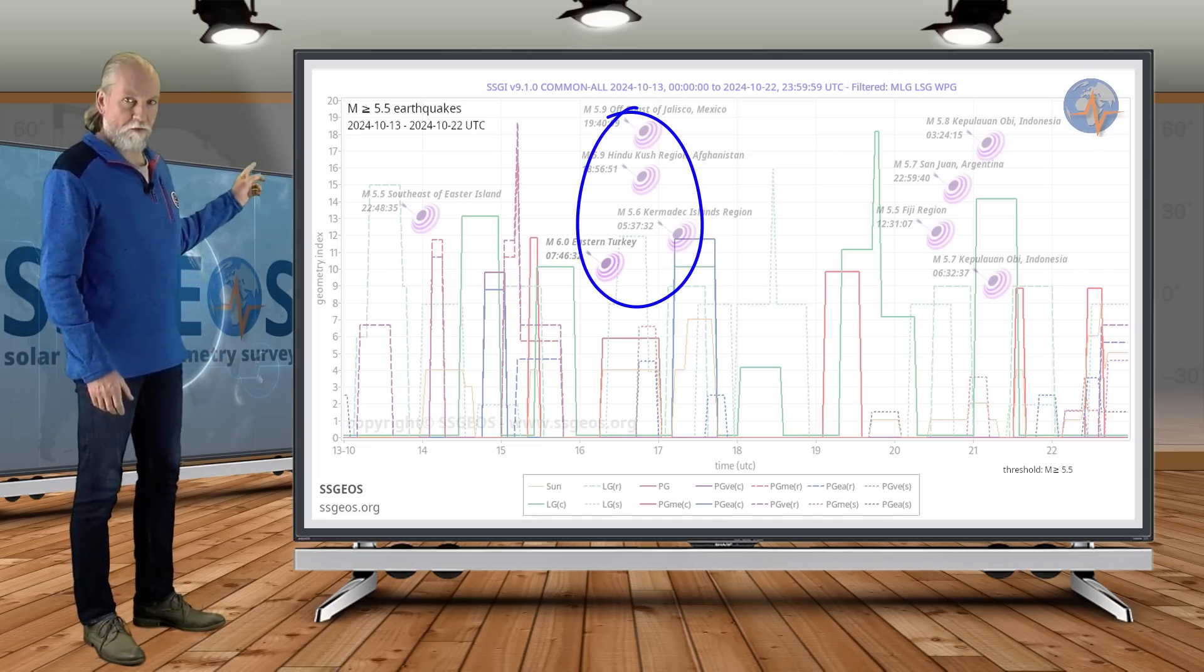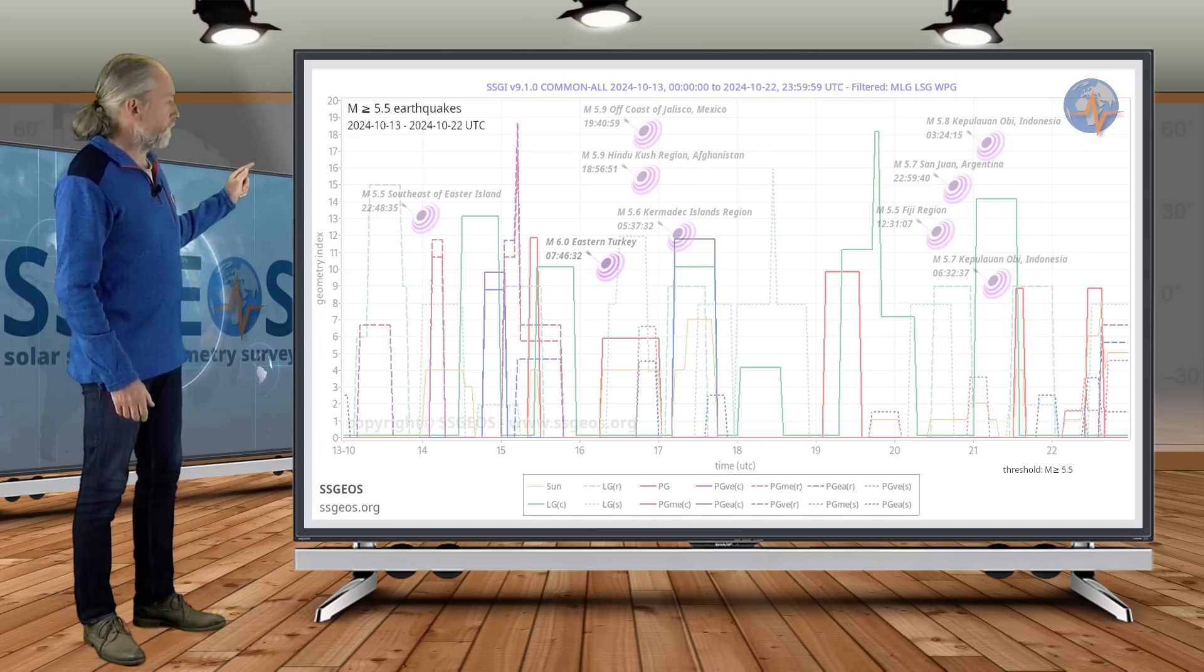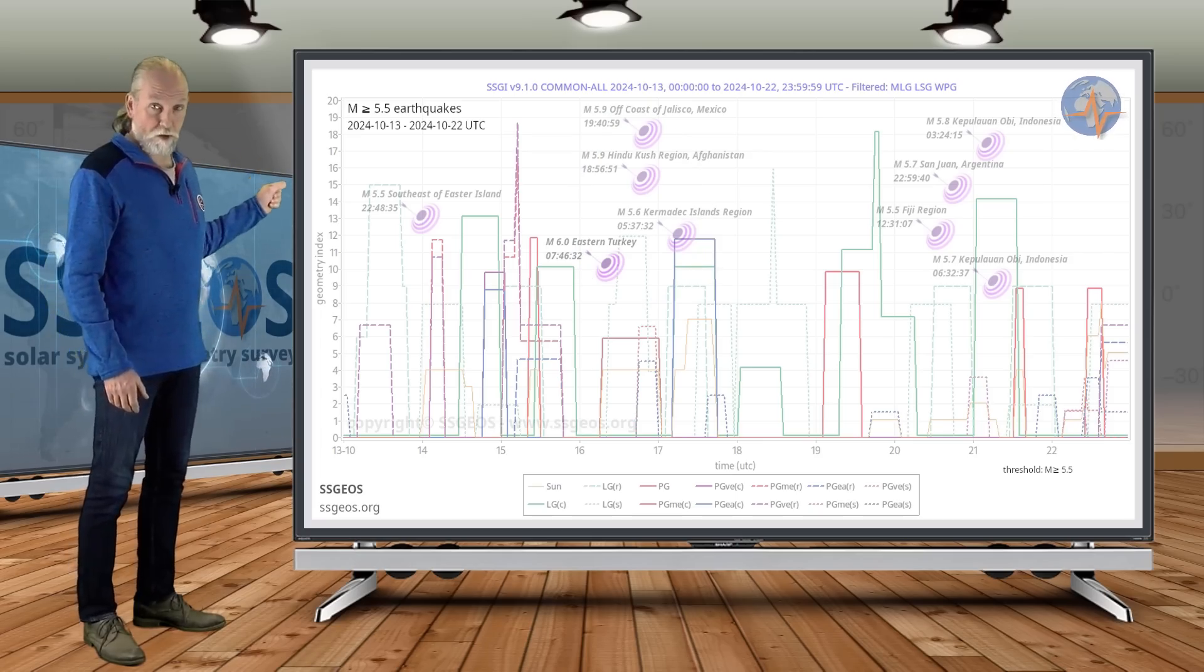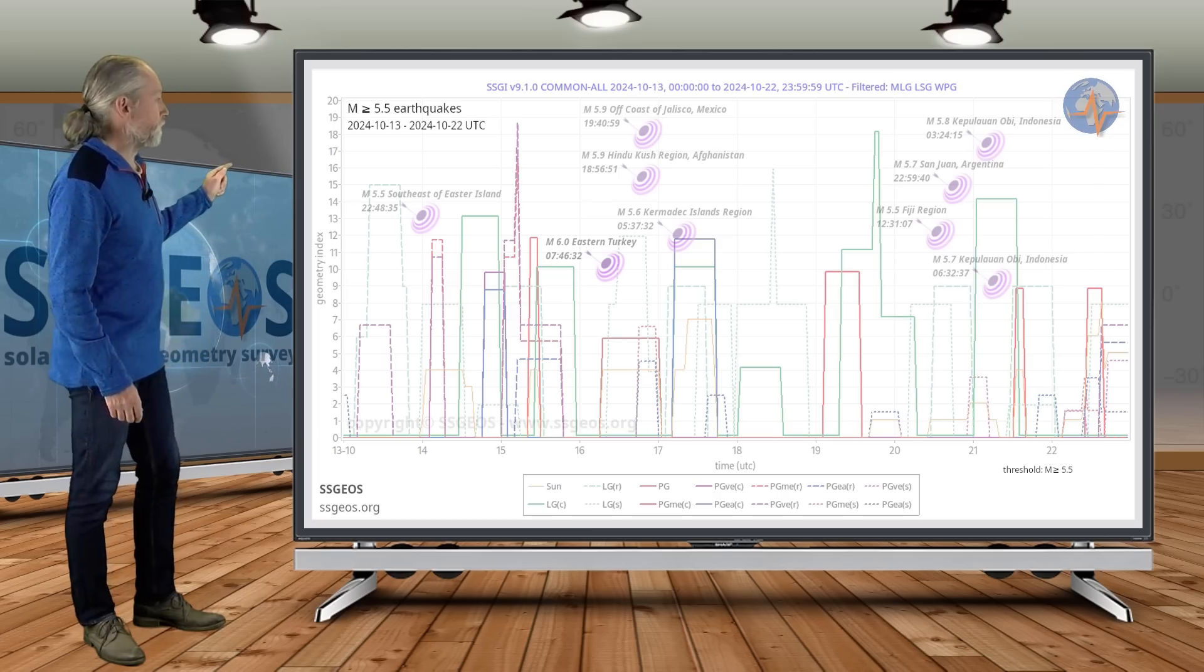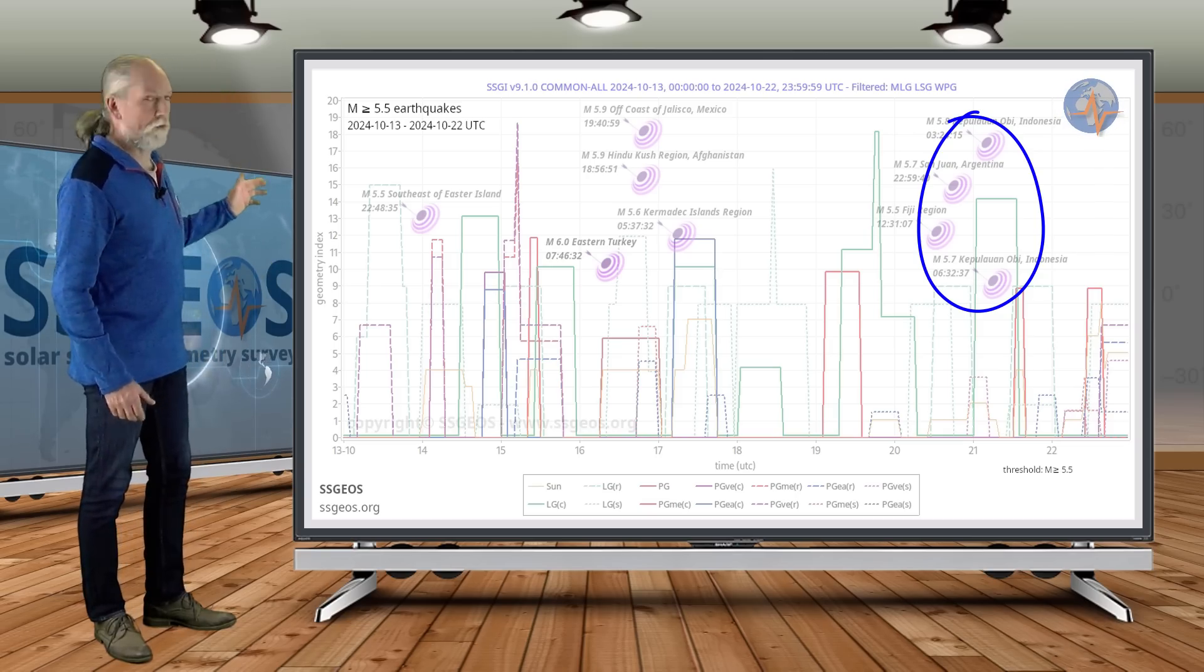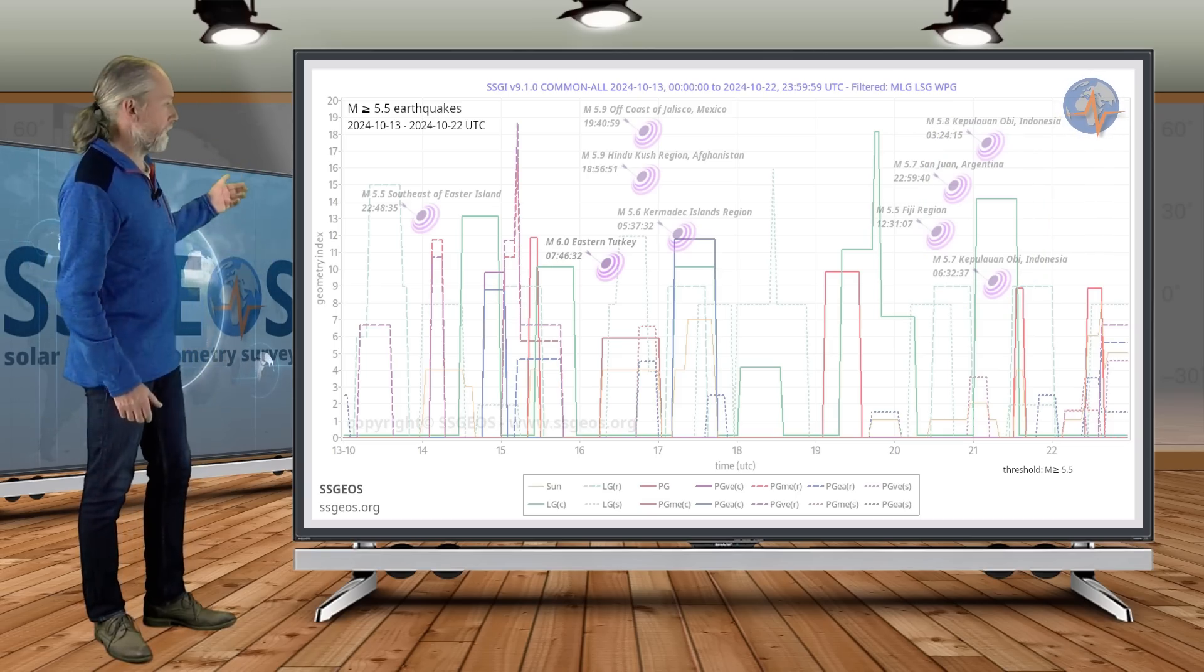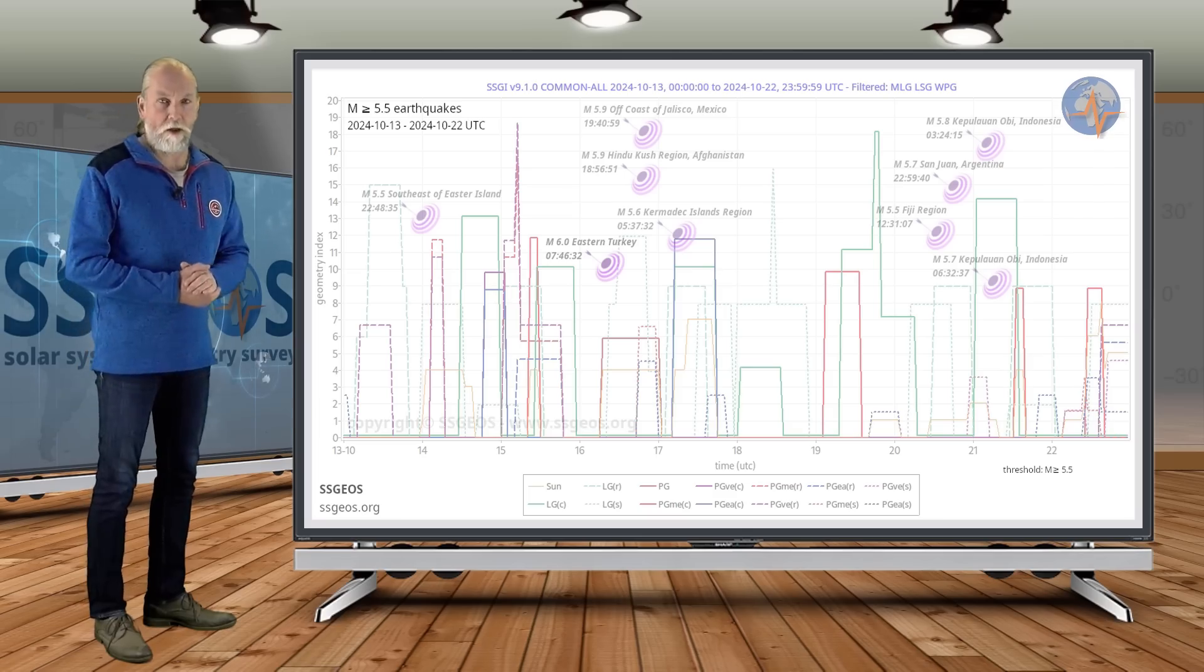But we do see an obvious seismic response on the 16th with three borderline 6 magnitude earthquakes, including one in eastern Turkey. We also see clustering in the higher 5 magnitude range on the 20th following the next lunar conjunctions with Venus and Uranus, and there was also a planetary conjunction with Mercury on the 19th.